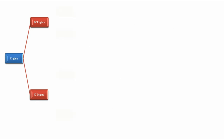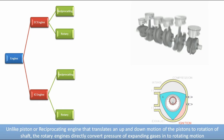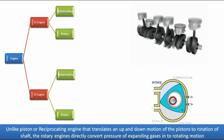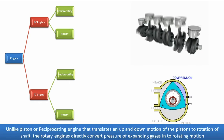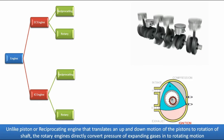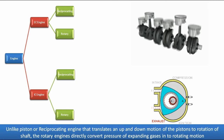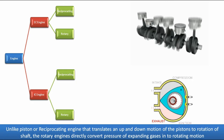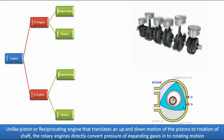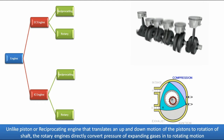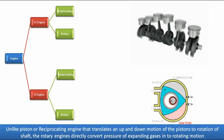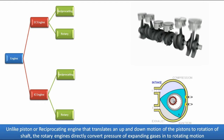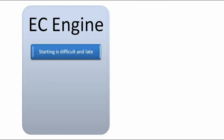Unlike piston or reciprocating engines that translate the up-and-down motion of the pistons to rotation of the shaft, rotary engines directly convert pressure into rotational motion. But why are only reciprocating internal combustion engines widely used? Let us compare both and see.